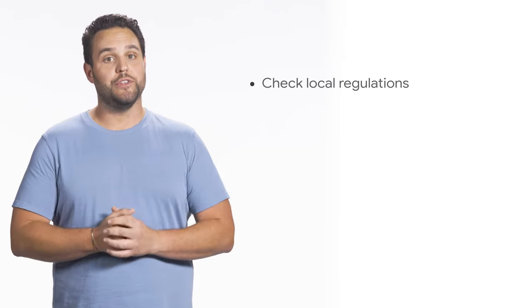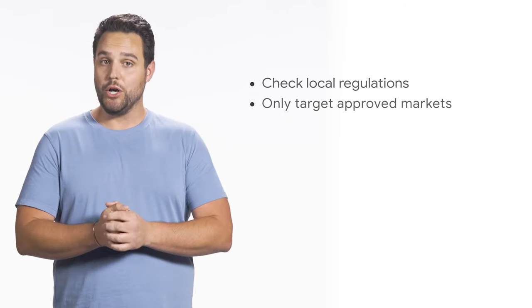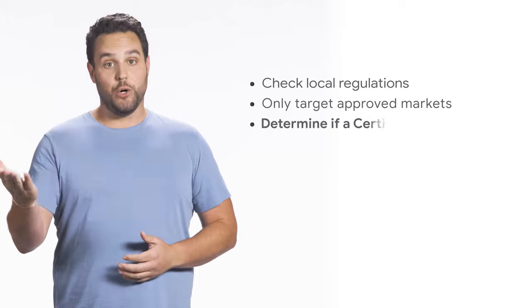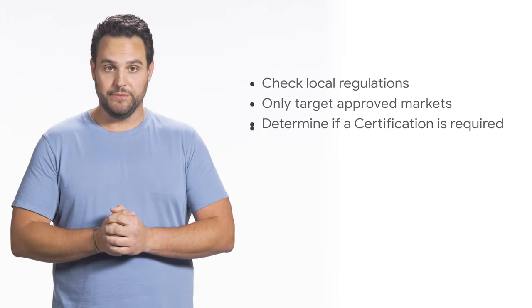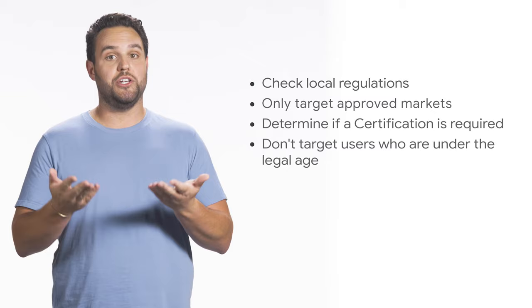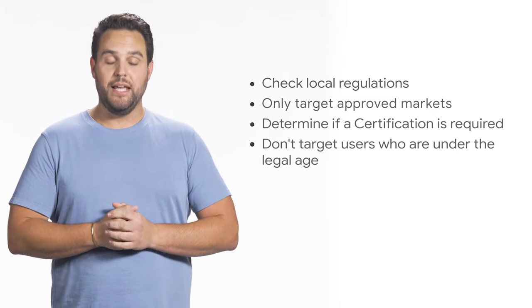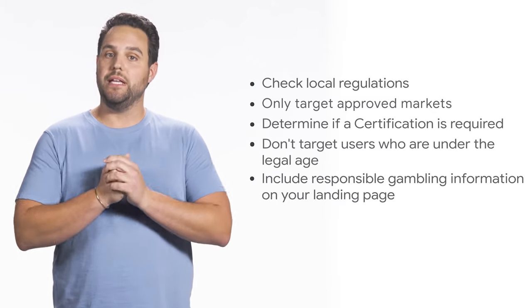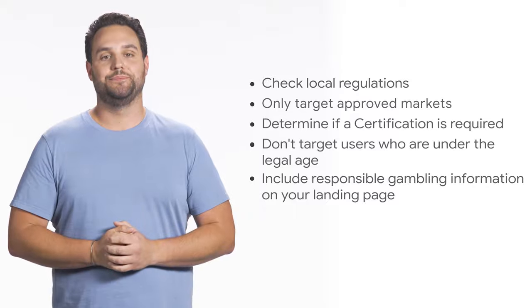As a quick reminder, when advertising for gambling and games, always check the local regulations for the areas you want to target and only target approved markets. Determine if a certification is required. Don't target users who are under the legal age to gamble in the market you're serving, and include responsible gambling information on your landing page. These are just some examples of the gambling and games policy, so be sure to review the entire policy article linked below to be fully compliant.